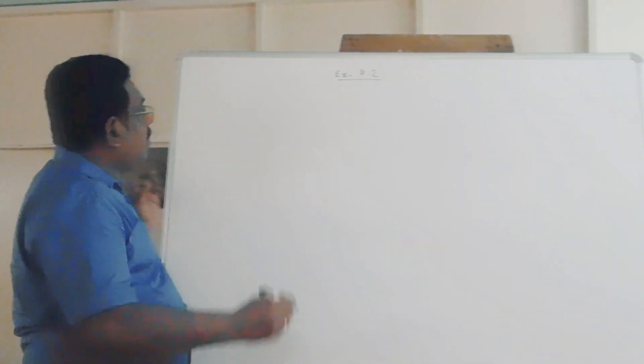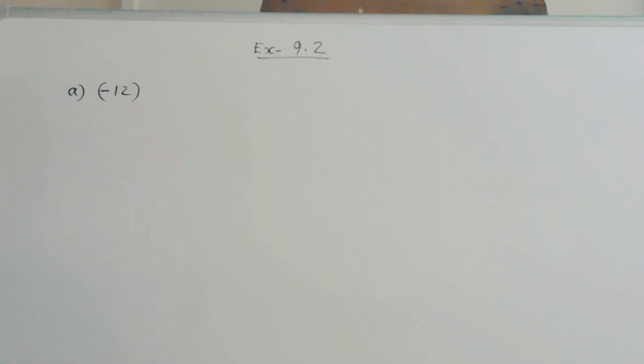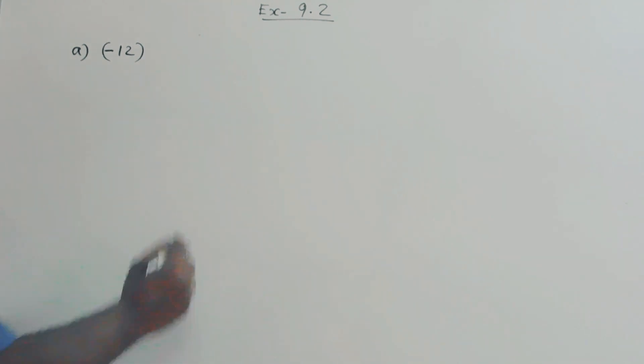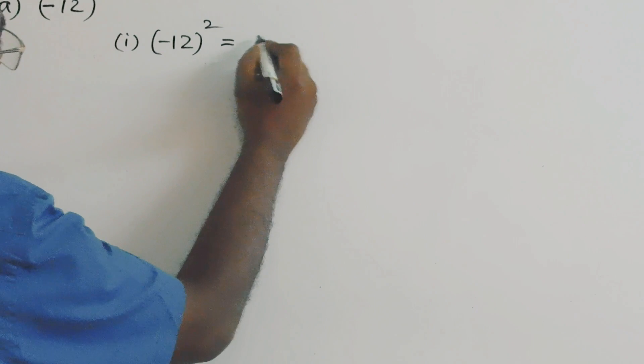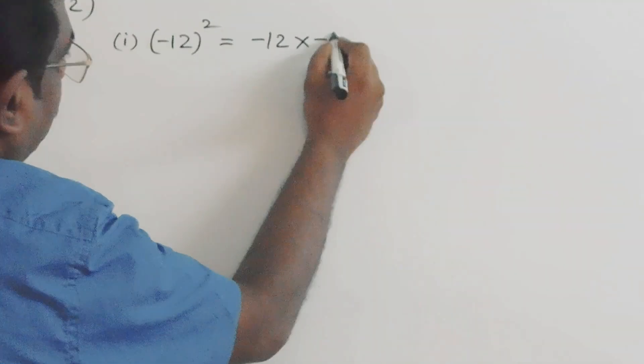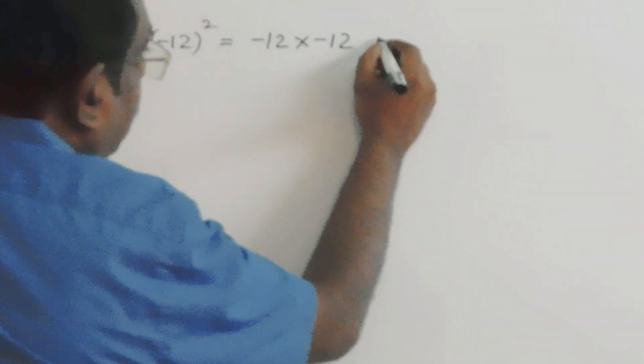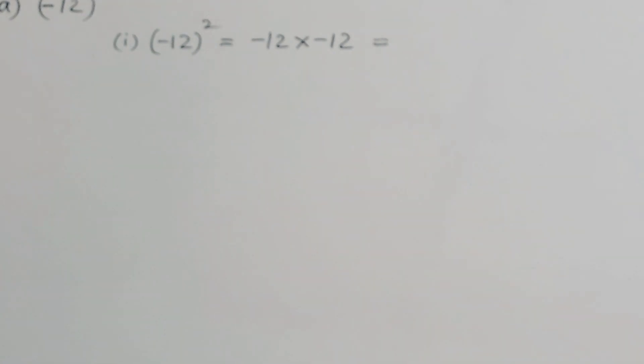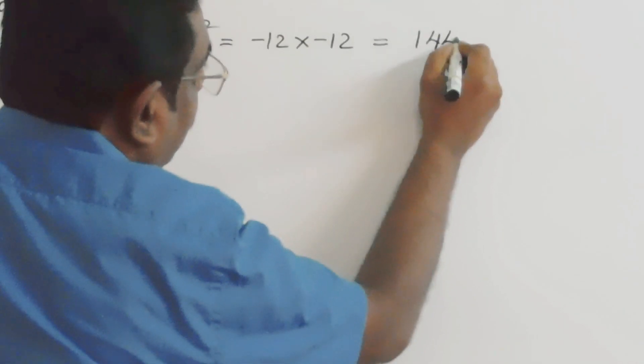Here question number a, we have minus 12. Here we have to find out the square and cube of this number. So, we start with the square of minus 12. That means, we have to multiply minus 12 into minus 12, two times. We know 12 times 12 is 144. Here minus into minus, the sign becomes plus. So, the answer is 144.